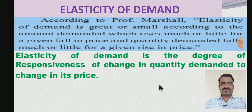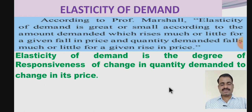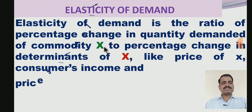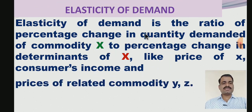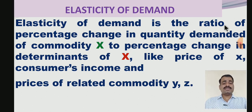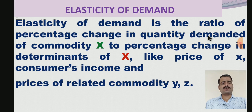Elasticity of demand is the degree of responsiveness of quantity demanded due to a change in its price. More precisely, elasticity of demand is the ratio of percentage change in quantity demanded of commodity X to percentage change in a determinant of X — like price of X, consumer's income, and prices of related commodities Y and Z. This is the best definition of elasticity of demand — it is the ratio between two factors.